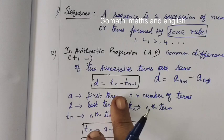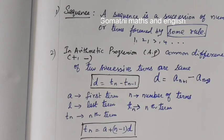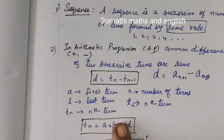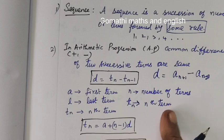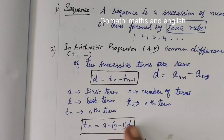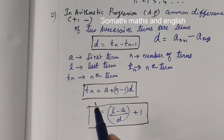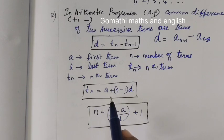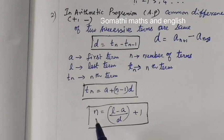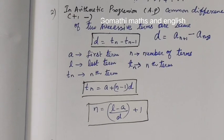a is the first term, l is the last term. tn means nth term. n is the number of terms. To find last term, tn equals a plus (n-1) times d is the formula. To find the number of terms, n equals (l-a)/d plus 1 is the formula.